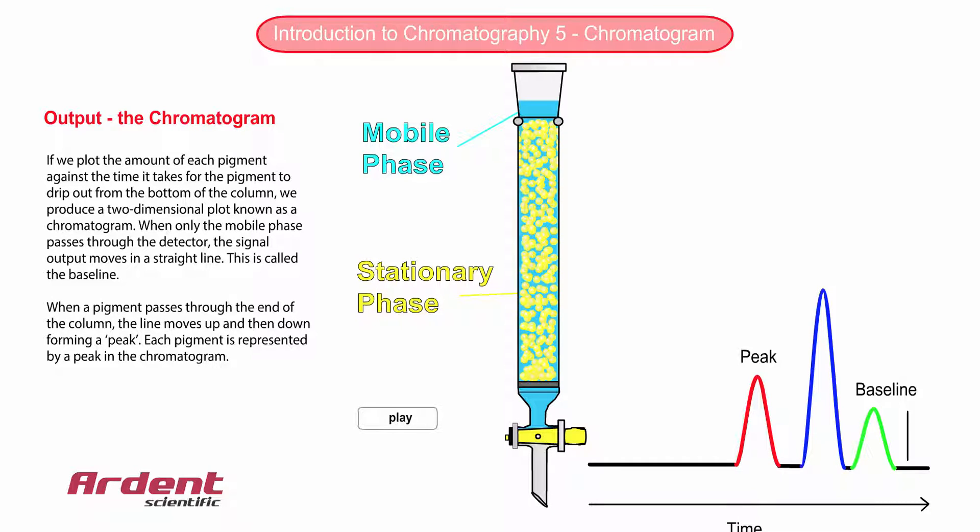You can also see in the chromatogram that there are different size peaks. The height and the area of the peak are proportional to the amount of pigment in the original mixture.